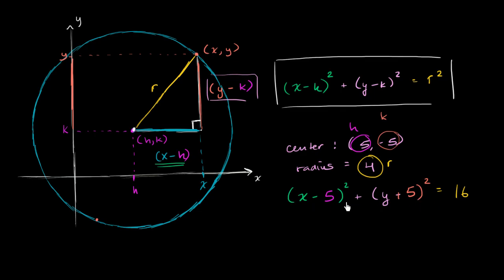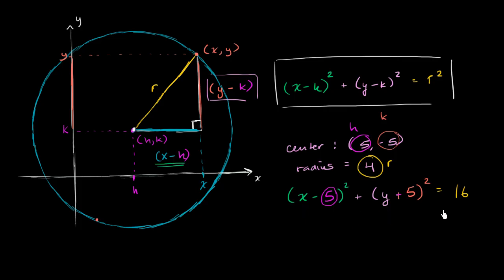On the other hand, if someone gave you this as the equation of the circle, you know the center is going to be at x equals five and y equals negative five. Another way to think about it is: what are the x and y values that will make each of these terms equal to zero? If you have x equals five, this term equals zero; if you have y equals negative five, this term equals zero. And if you had a circle centered at the origin, you'd just have x squared plus y squared equals the radius squared.